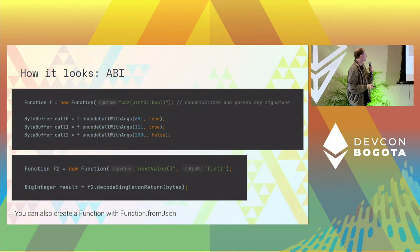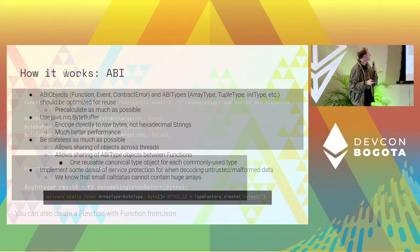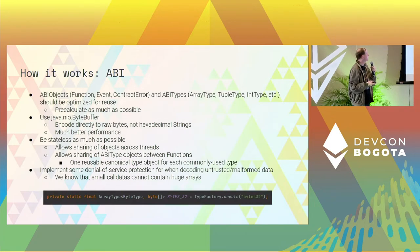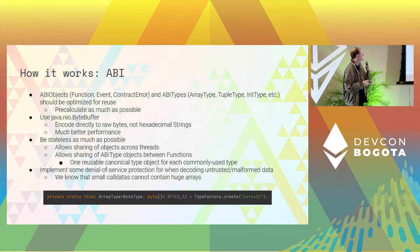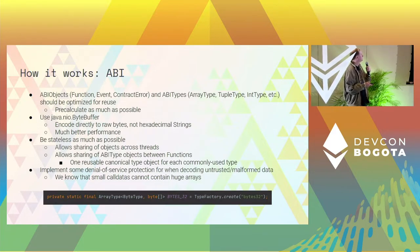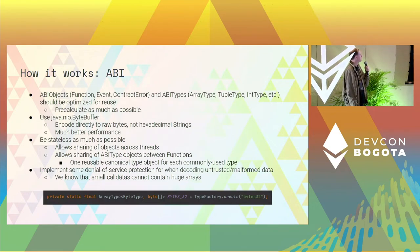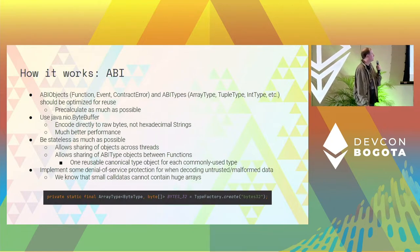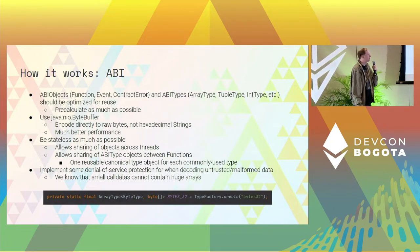Here's some decoding, and it also deals with JSON, so you can parse JSON and create a function from JSON. It also does event decoding, which was added recently. Here's some details on how I got the performance benefits from using byte buffer and precalculating things and holding on to them for multiple encodings and decodings.